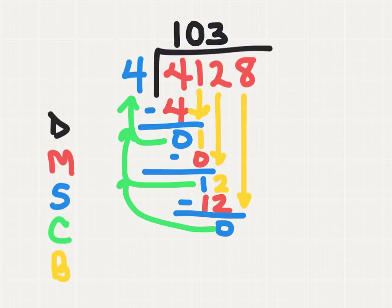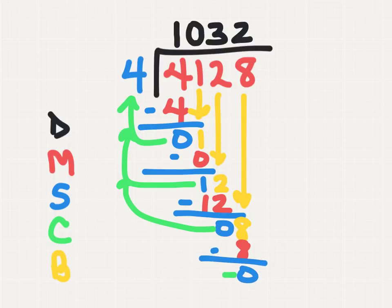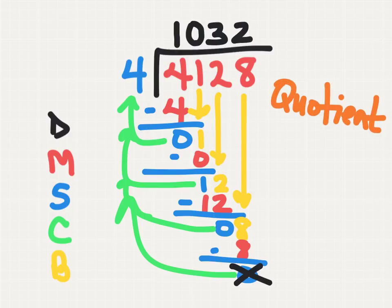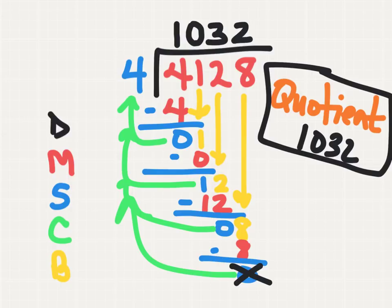0 is less than 4, so I bring down the 8. How many times can I subtract 4 from 8, or how many groups of 4 can I make from 8? The answer is 2. 2 times 4 is 8. 8 minus 8 is 0. 0 is less than 4, and when I go to bring down, I'm out of numbers with 0 remaining. So I'm finished. My quotient for this problem is 1,032. 4,128 divided by 4 gives a quotient of 1,032.